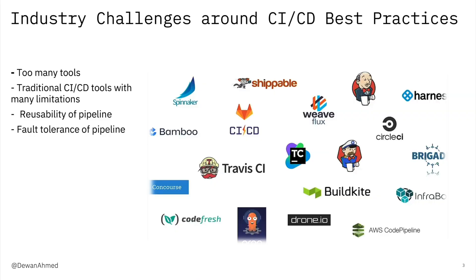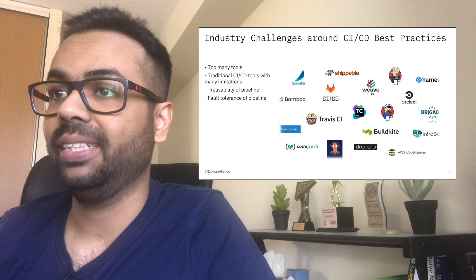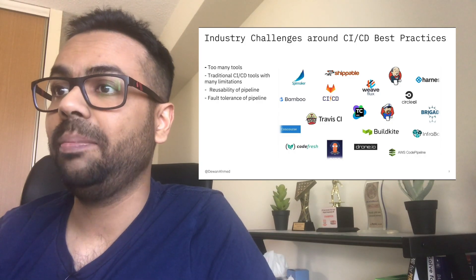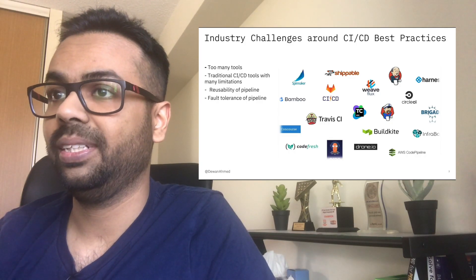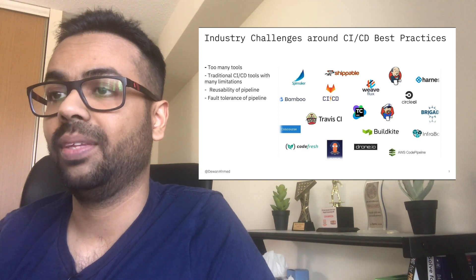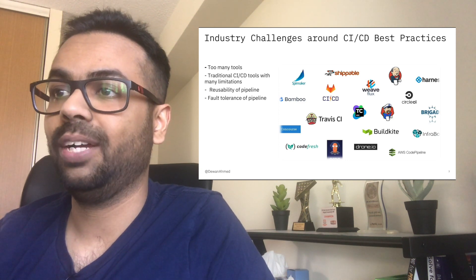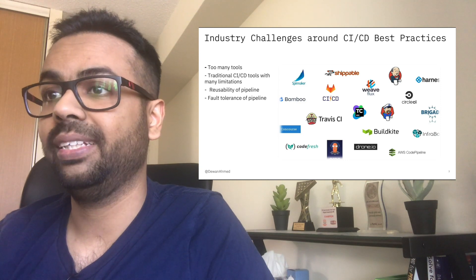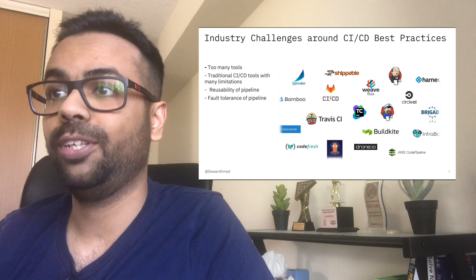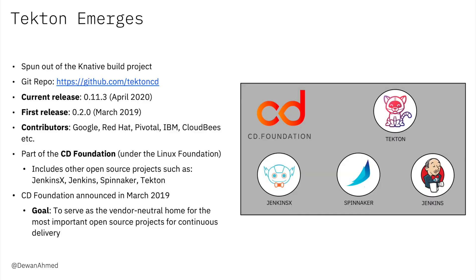If we look at the industry for CI/CD tools today, we will see there are a number of tools. Now some of these tools are from the pre-container era. That means the pipelines that you define in these tools might not be reusable. Also, if your CI/CD server goes down — which typically is a monolith — then fault tolerance would be an issue.